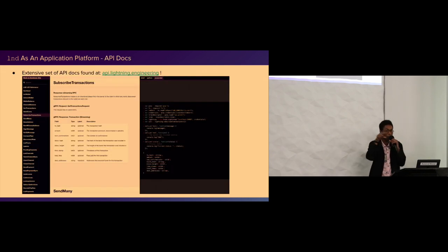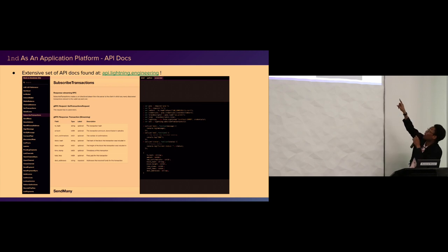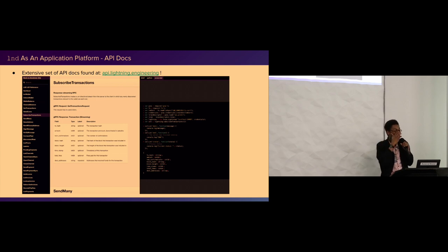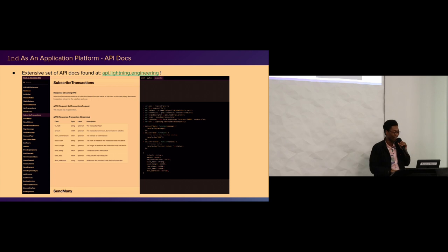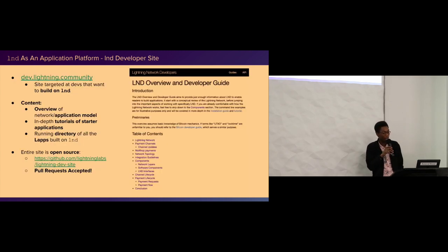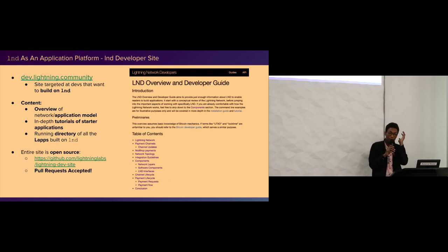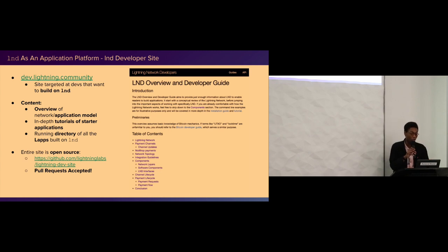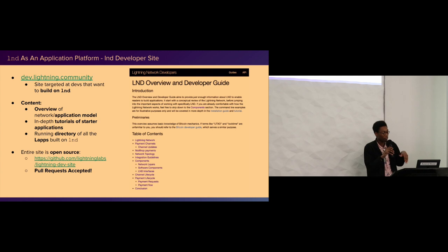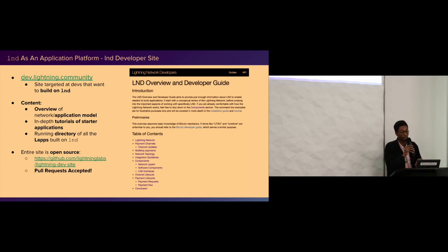We have a pretty cool developer site made by Max last summer - api.lightning.community - where you can see every single RPC that LND has, with example code shown for command line, Python, and JavaScript. It's automatically generated, so any time we update the protos, it gets updated too. We also have a developer site for LND with a good overview section to get you in the proper mindset for application development, walking through topology, channel updates, and a directory of cool LAPs. There's even a tutorial called Coindesk that shows how to add a paywall. The site is open source, so you can add new examples or languages.